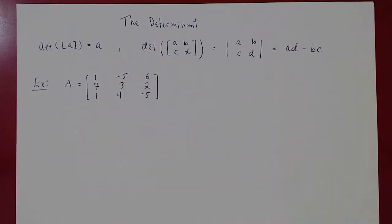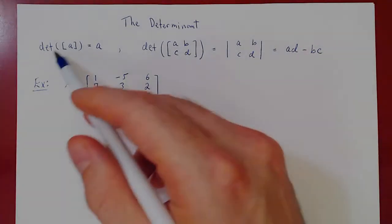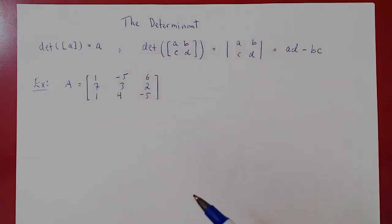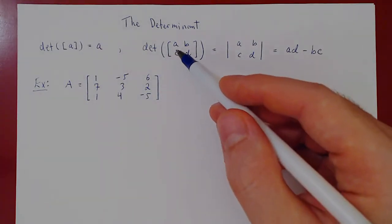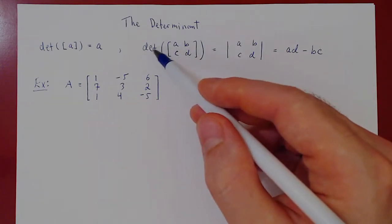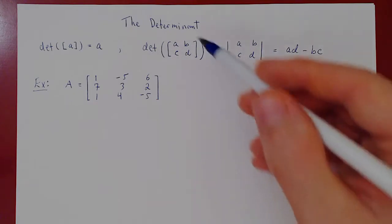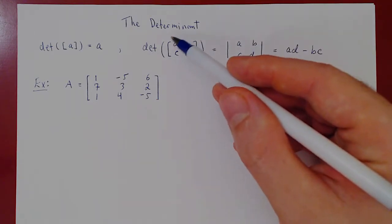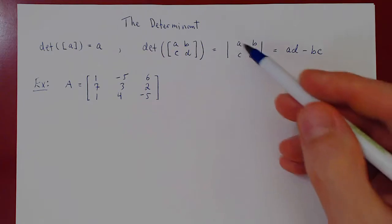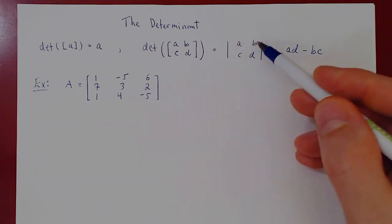Now we'll see how to compute the determinant of a square matrix algebraically. The determinant of a 1 by 1 matrix is simply the entry of that matrix. The determinant of a 2 by 2 matrix given by A, B, C, D — which we can denote with 'det' or by replacing the square brackets with vertical bars — is simply AD minus BC.